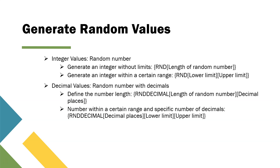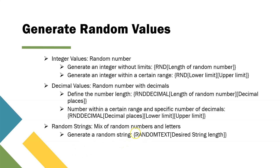The next thing is random strings — a mix of random numbers and letters generated by Tosca. The expression is random text, and in square brackets you define the desired string length; Tosca will generate random text of that particular length. There are also other options like generating a string with a timestamp, but the ones covered so far are generally the most used in test cases. Now let's see how this can be useful in a real scenario.